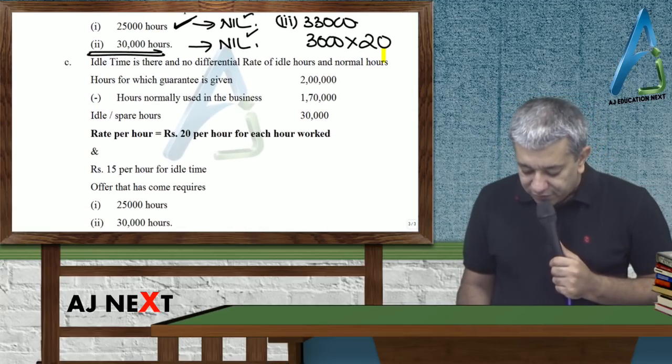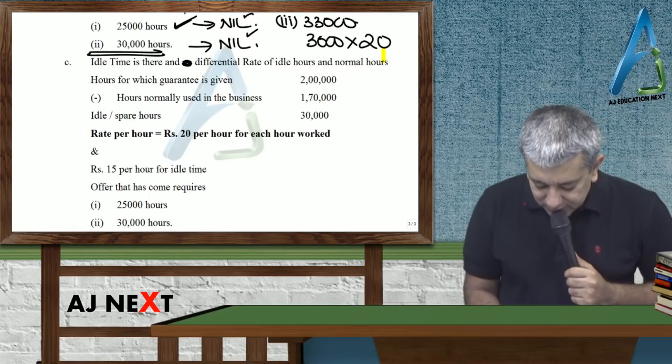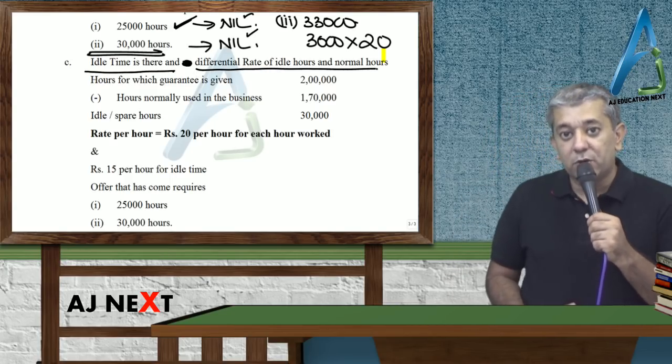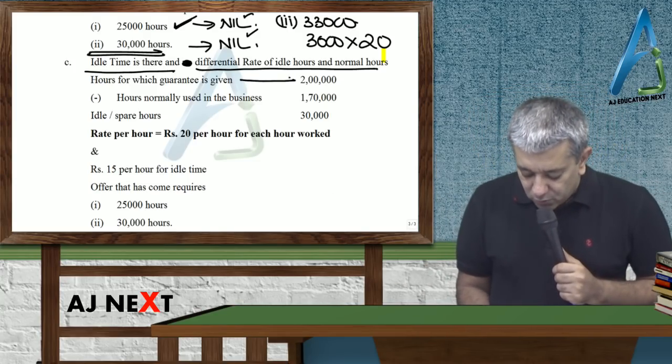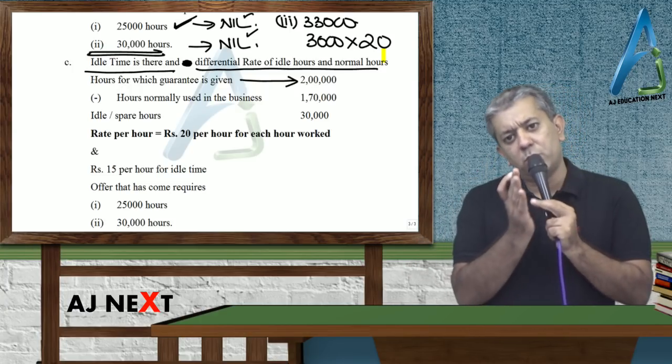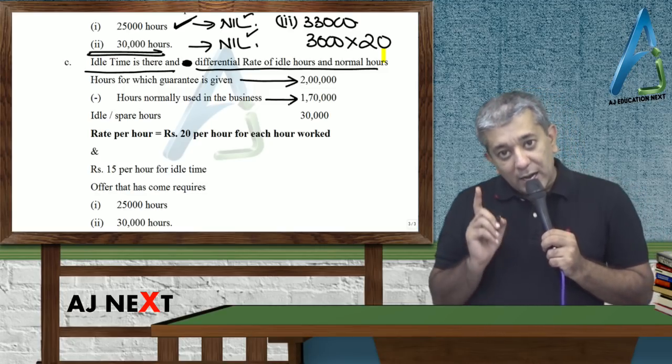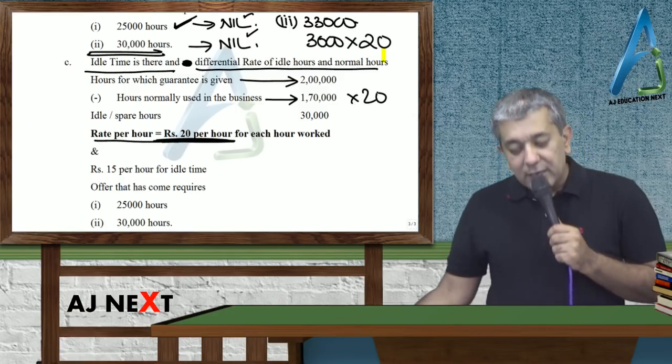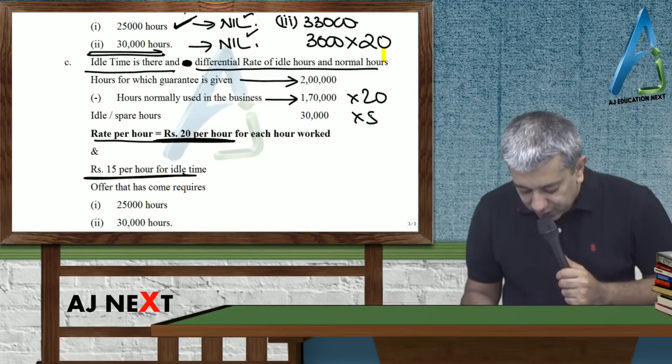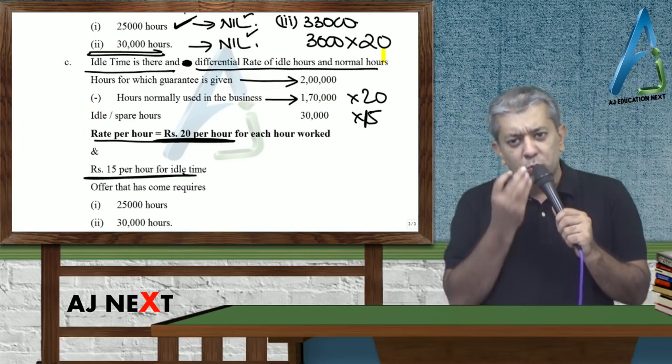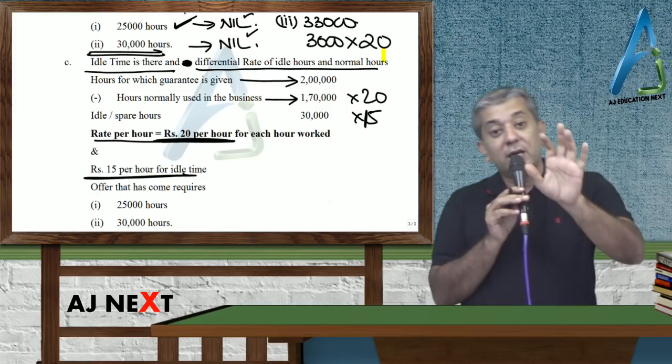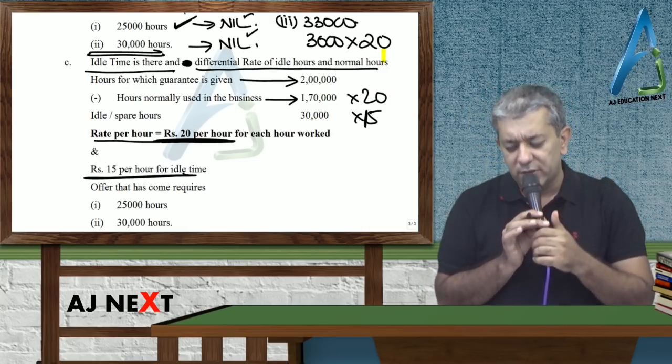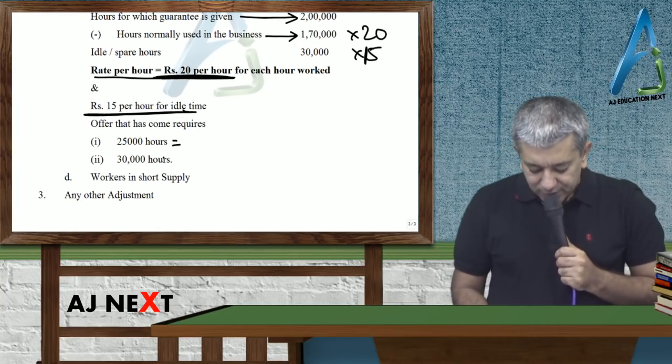This is when idle time was there and no differential rate. Now I've changed something. Look carefully. Idle time is there and there is differential rate of idle hours and normal hours. There is differential rate. That means look - management told workers we guarantee you for 2 lakh hours. Workers clapped again. They were told, but listen, every hour that you work, we will pay you at the rate of 20 rupees. But every hour that you remain idle, we will pay you at 15 rupees. Obviously if you're not working, we won't pay you the working rate. We guarantee 2 lakh hours, but in this particular case for every hour that you work we pay you 20, for every hour that you do not work we pay you at the rate of 15.